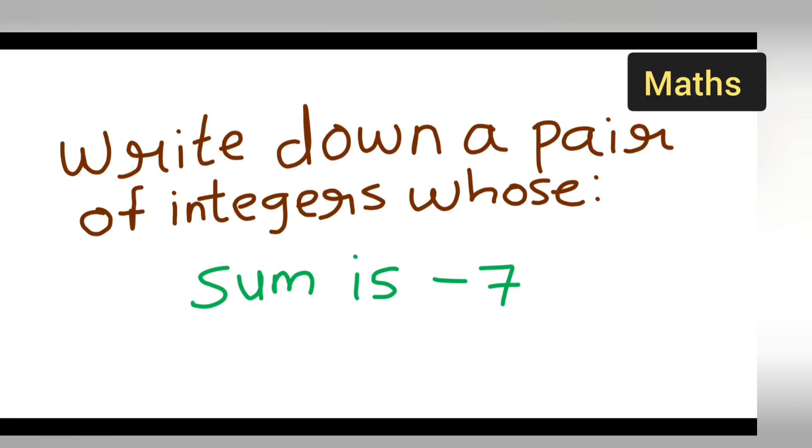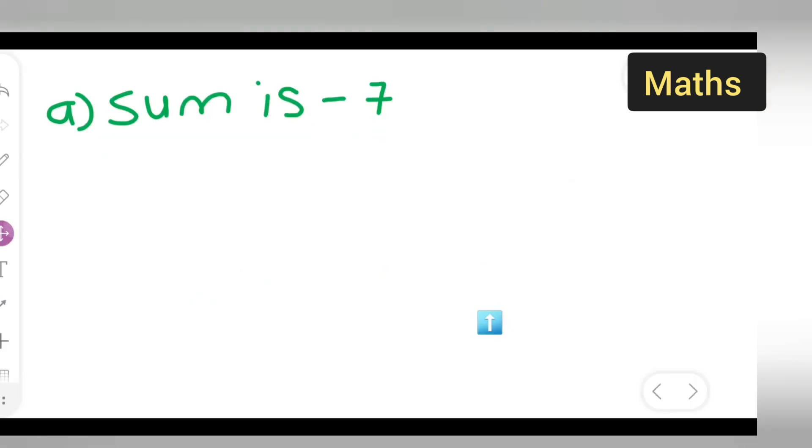In today's class of mathematics, let us write down a pair of integers whose sum is minus 7. First, you all can take down the question: the sum is minus 7. How are you all going to do this? Let me write it down. A pair of integers, write down a pair of integers.